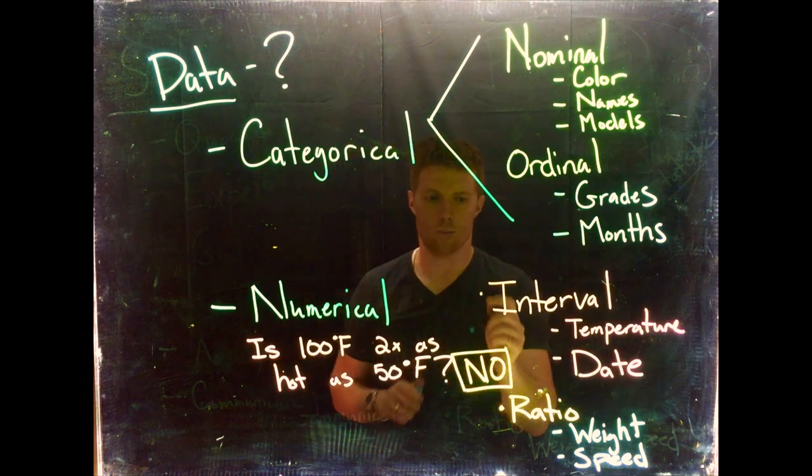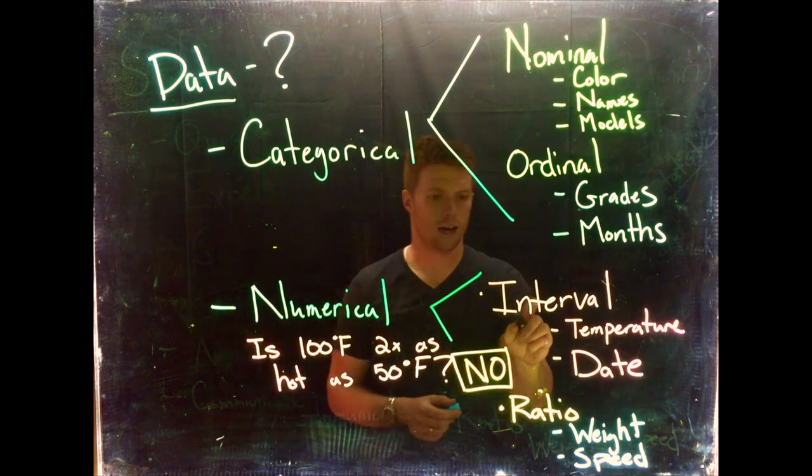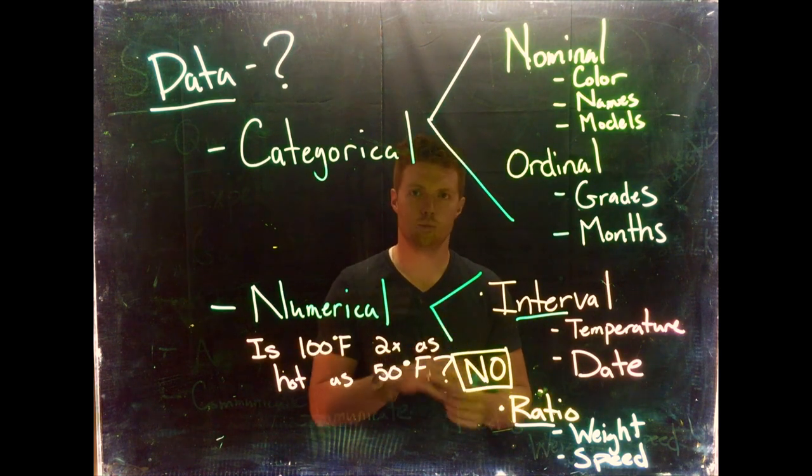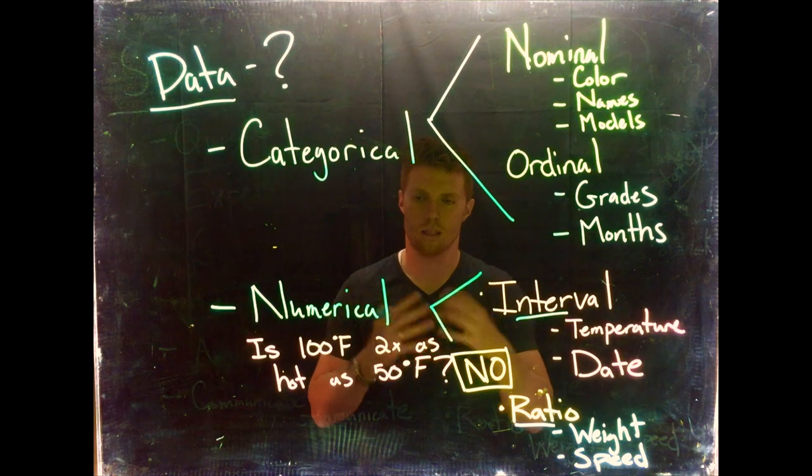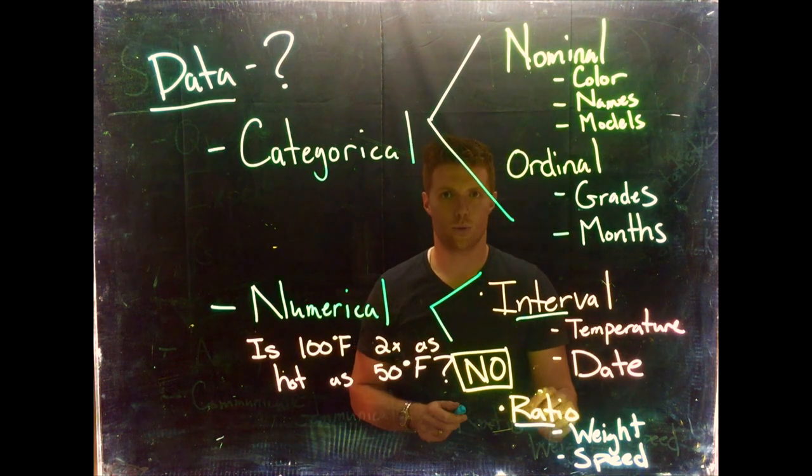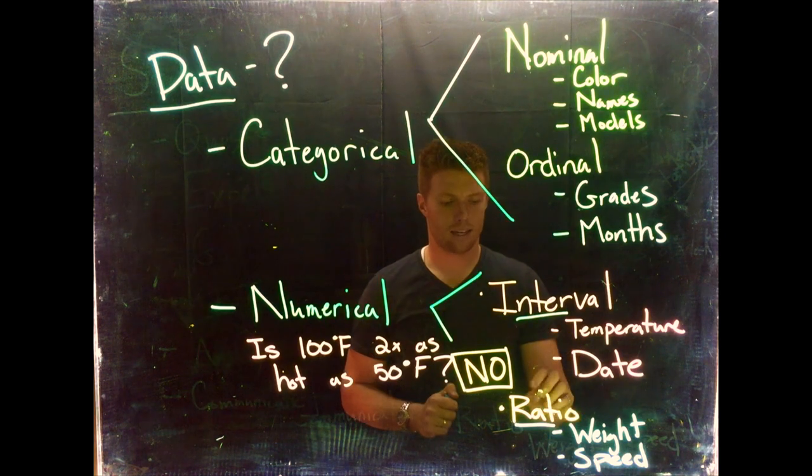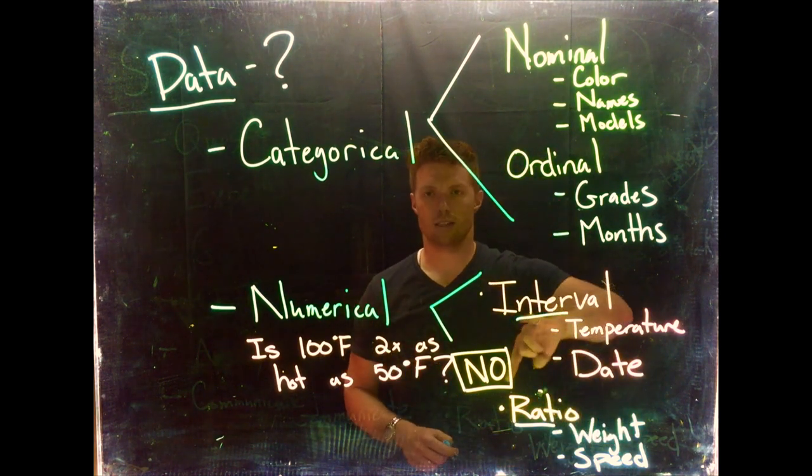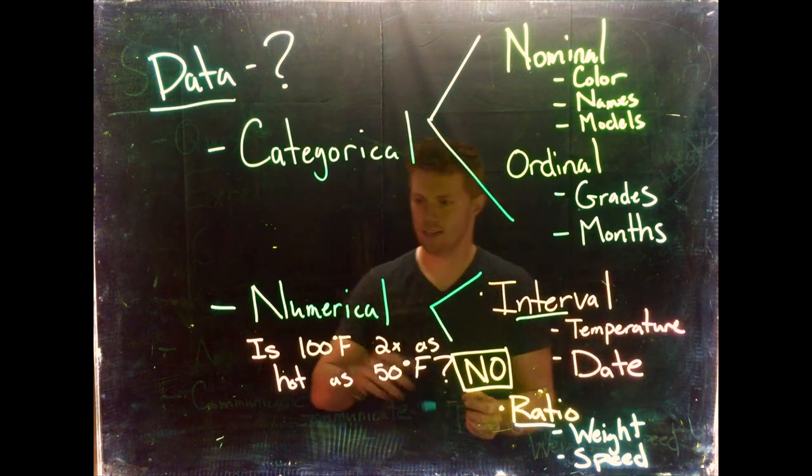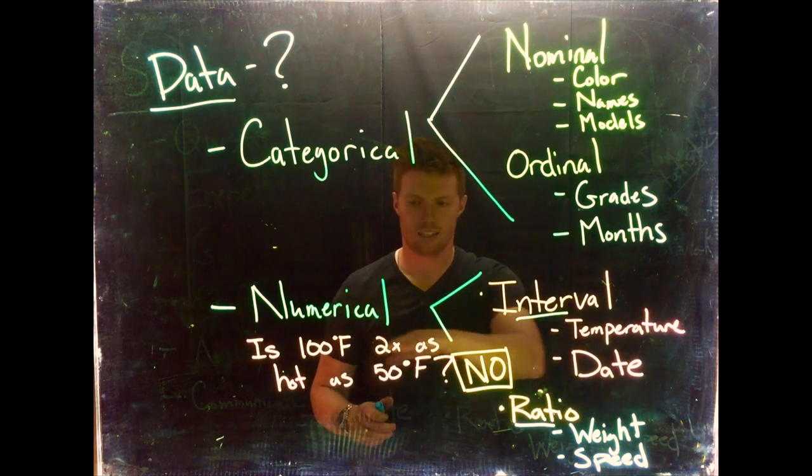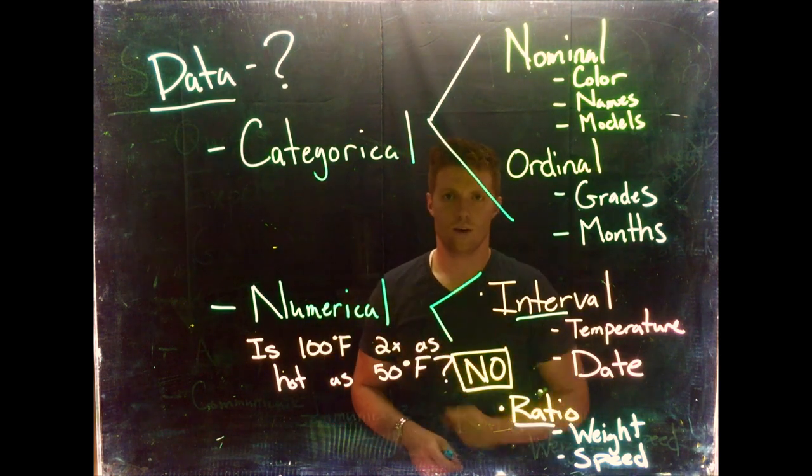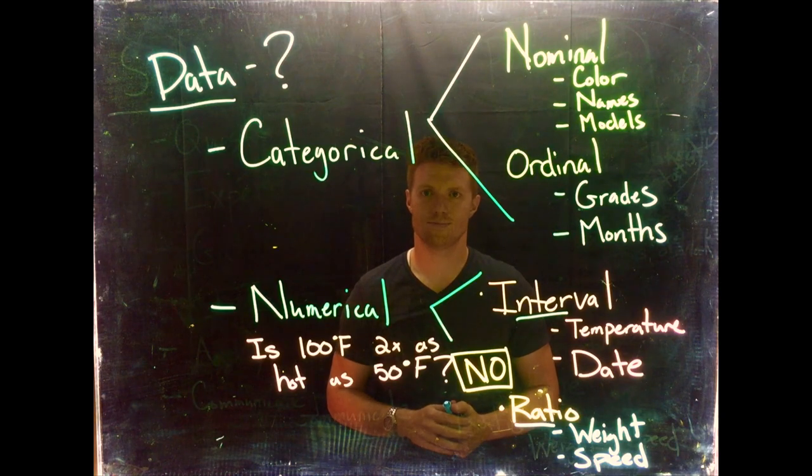When we look at numerical data, we've got two types as well: interval and ratio. Interval - there are set distances between measurements but there isn't a logical or natural zero point. Ratio - there is a zero point, a reasonable one, and there are set distances between. The easiest way to tell the difference is division. If we take a temperature and divide it by two and ask 'is it twice as hot?' and this doesn't make sense, that's a good indication we have interval data. But if we can do division meaningfully, we know we have ratio data.